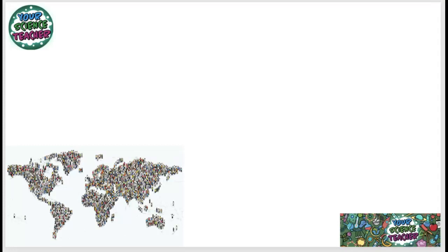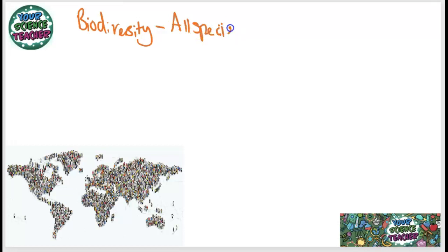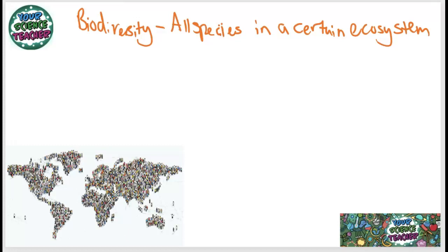The topic of Biodiversity and Ecosystems starts off by looking at what biodiversity actually is. Biodiversity can be defined as all of the different species living in a certain ecosystem. Maintaining biodiversity is incredibly important because a biodiverse environment is usually a stable environment. This is because species can rely on other species in order to survive.